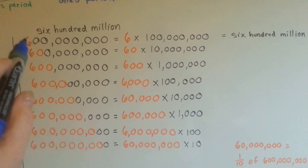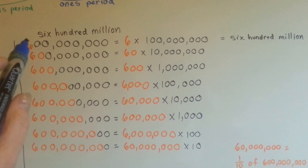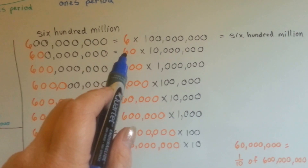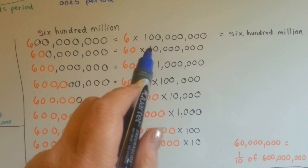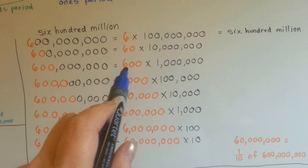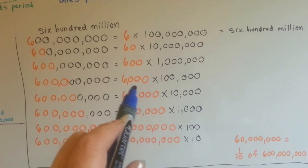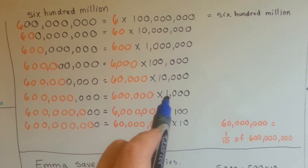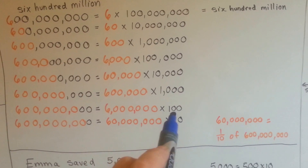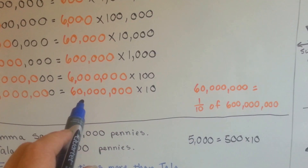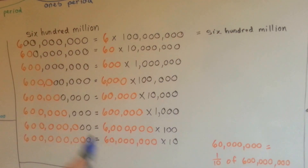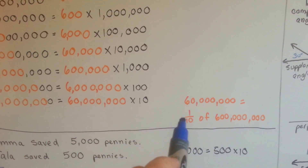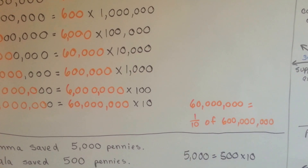Here's the ones period, the thousands period, and now we're in the millions period at six hundred million. Six hundred million is the same as having one hundred million six times, or sixty times ten million, or six hundred times one million, or six thousand times one hundred thousand, or sixty thousand times ten thousand, or six hundred thousand times one thousand, or six million times a hundred, or sixty million times ten. Every single one of these equals six hundred million. Because of that last one, sixty million is one tenth of six hundred million.